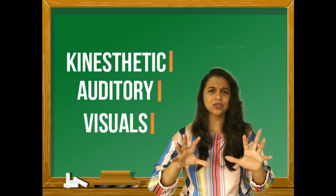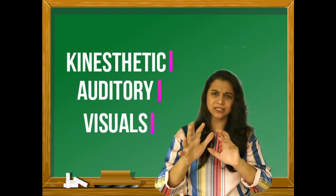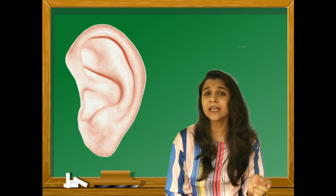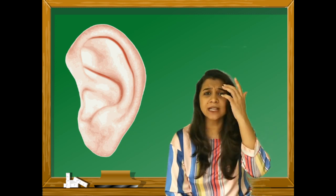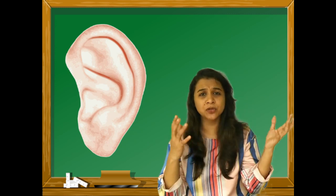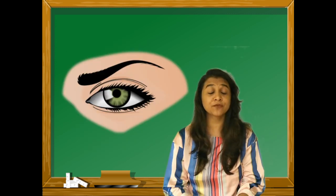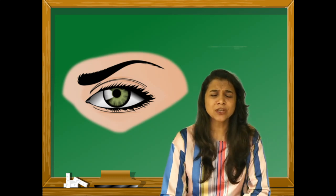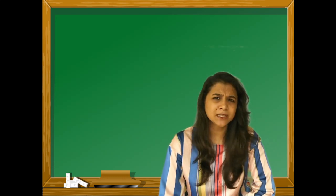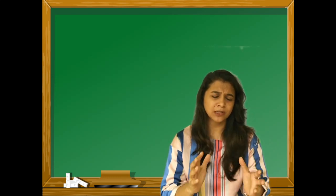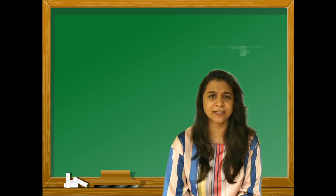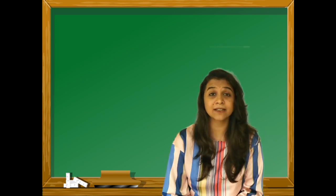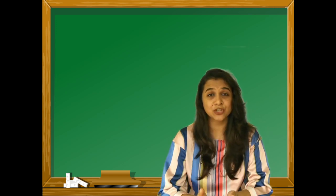Kinesthetic learners are those people who understand everything through touch and feel. Auditory learners are those people who have to listen to everything. And visual learners are those people who have to see. These three types of learners each have some distinct characteristics, so let us understand the characteristics of each.